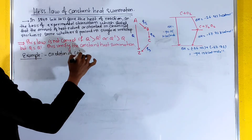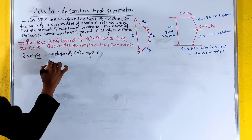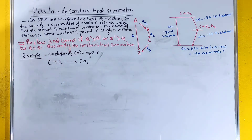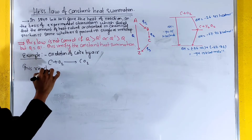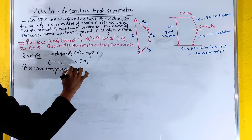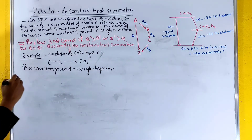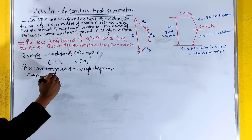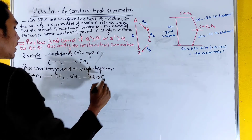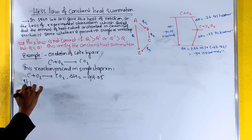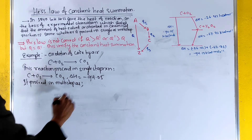Example: Oxidation of coke by air. First case: the reaction is C plus O₂ going to CO₂. This reaction proceeds in a single step reaction. Carbon plus oxygen gives carbon dioxide. Delta H equals minus 94.05 kJ.